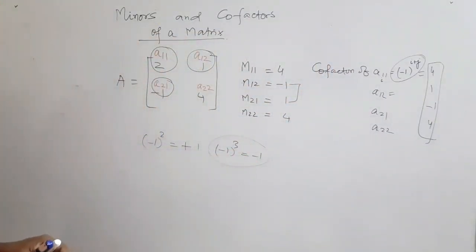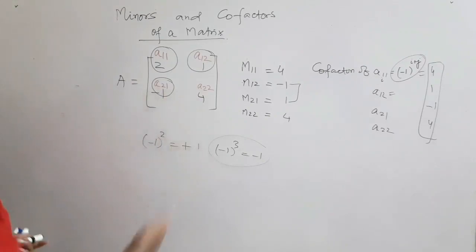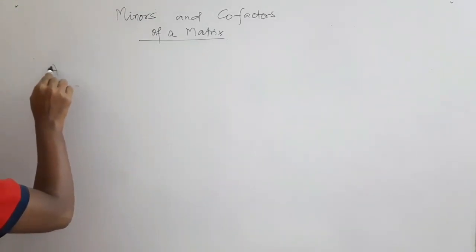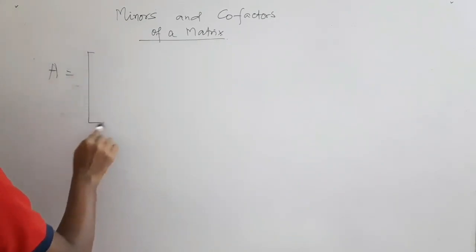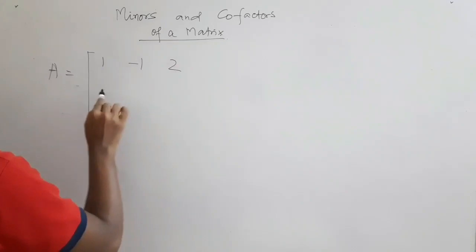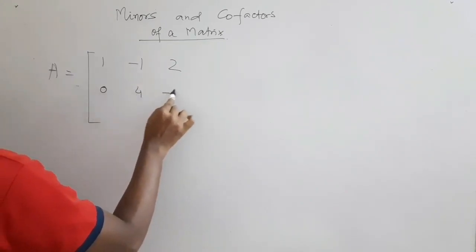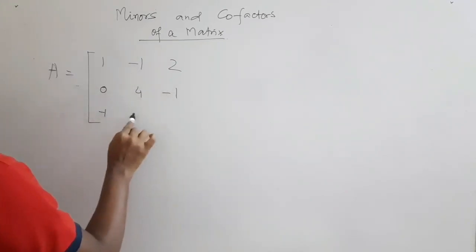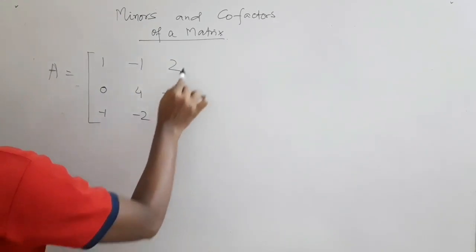Now I take the same approach but for a third-order matrix. I take a 3 by 3 matrix: 1, minus 1, 2 in the first row; 0, 4, minus 1 in the second row; and minus 1, minus 2, 3 in the third row.